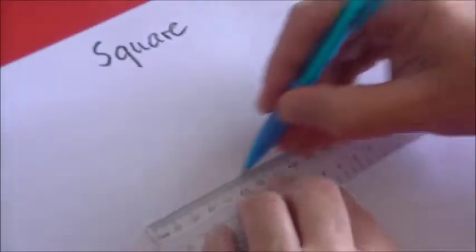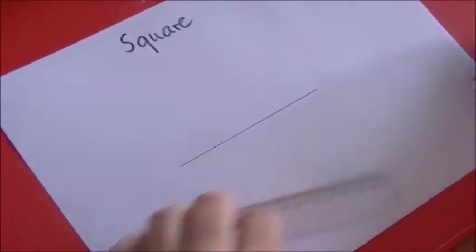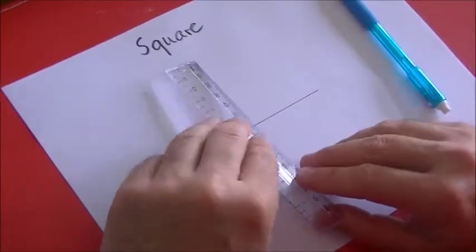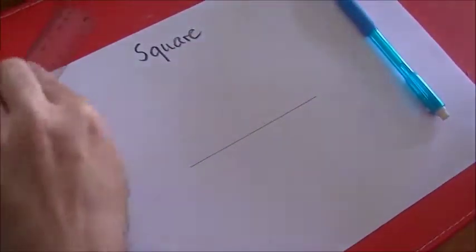Okay, let's make a square. We start with a line. And then what we're going to do—well, we can't just go up and down there because we don't know that it's going to be the right size.